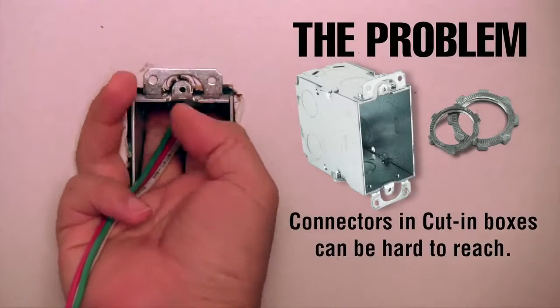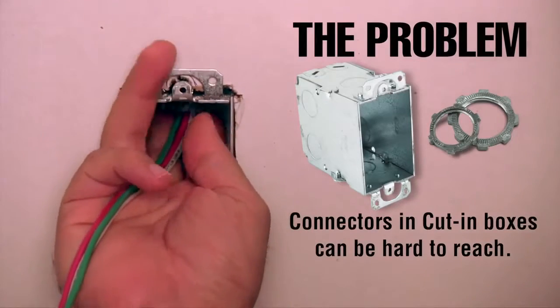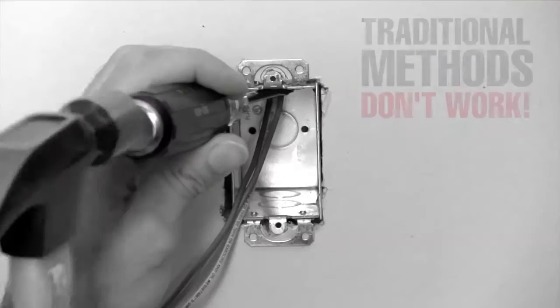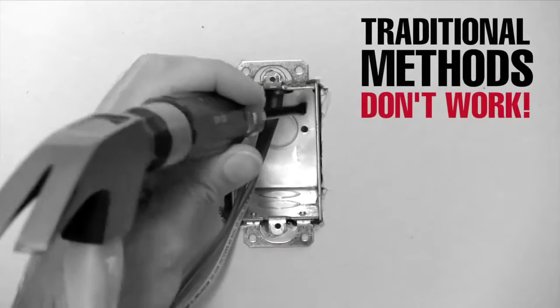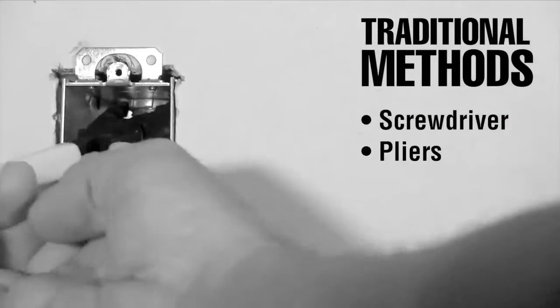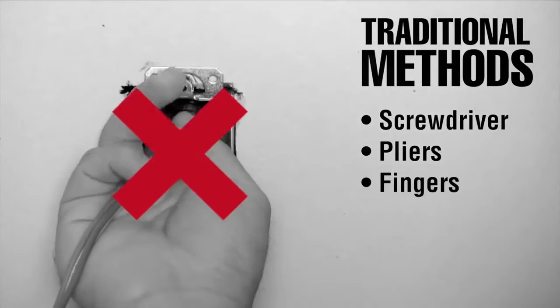Cut-in boxes are hard to reach and usually too small for most hands to easily attach conduit connectors. Traditional methods of attaching lock nuts like a screwdriver, pliers or fingers don't work.